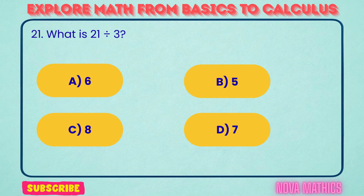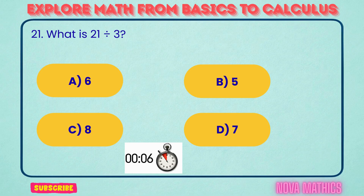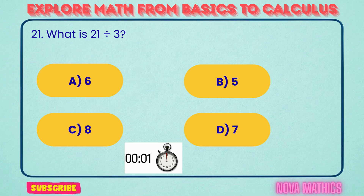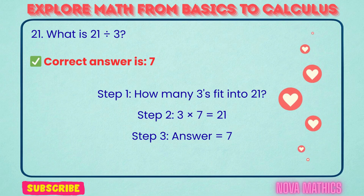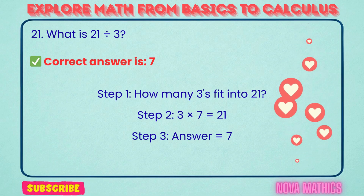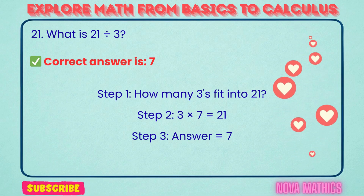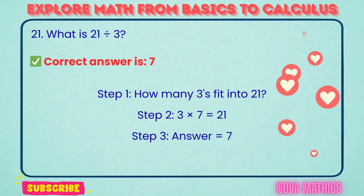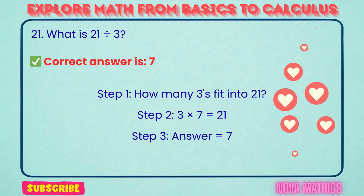21. What is 21 divided by 3? Correct answer is 7. 21 divided by 3 equals 7. We find this because 3 times 7 is 21.